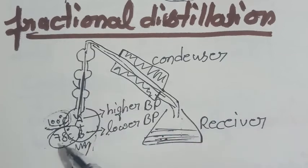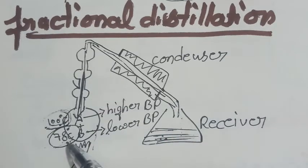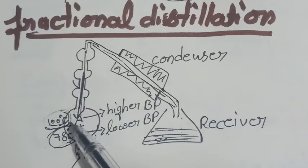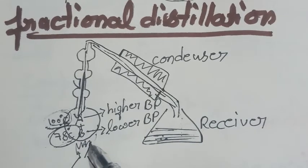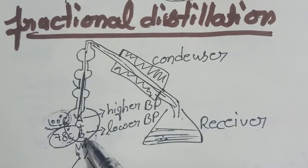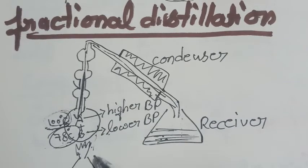The vapors of liquid with lower boiling point rise. And the vapors of that which has higher boiling point condense in this round bottom flask. The higher boiled liquid may also come back to the flask. Whereas,